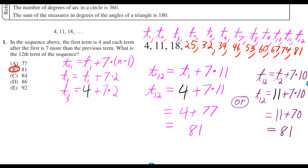And since the first term was 4, and we're adding 11 sevens, then we're adding 77 to 4, which gives you 81.